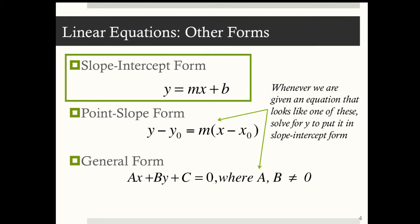So whenever we're given an equation that looks nothing like slope-intercept form, we want to rearrange it and use our rules of algebra to get to slope-intercept form. In other words, we want to solve for y. We want to isolate it on the left-hand side and put everything else on the right-hand side.